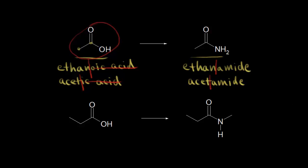Acetamide is an example of a primary amide. The way I like to think about this is that the nitrogen is bonded to only one carbon, and that's what makes it primary.